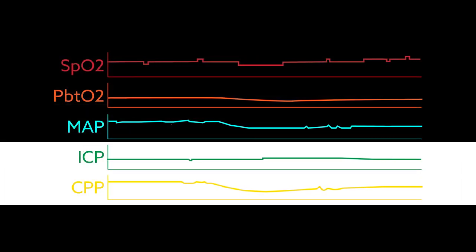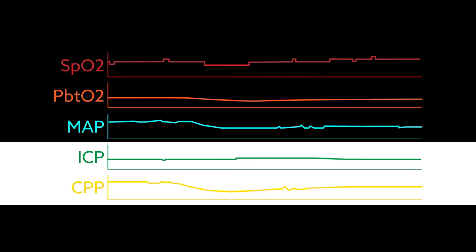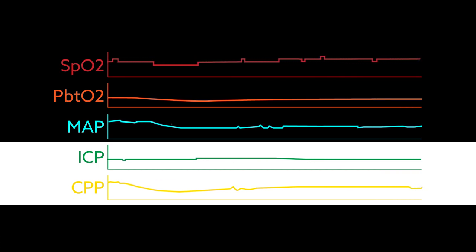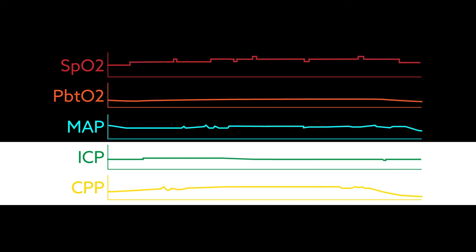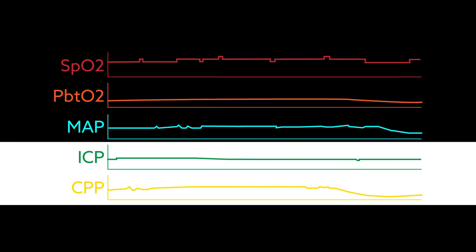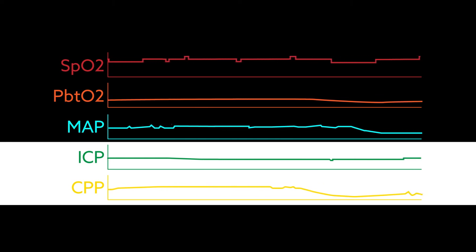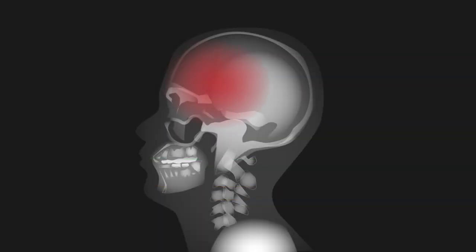Although intracranial pressure and cerebral perfusion pressure values are widely used to help manage traumatic brain injury, neither variable describes the adequacy of cerebral perfusion, an important factor when managing an injured brain. Indeed, cerebral ischemia frequently occurs even when intracranial pressure and cerebral perfusion pressure are within normal limits.